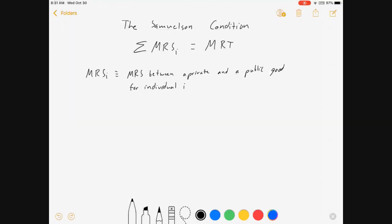That little I there is talking about a person. Each person can have their own marginal rate of substitution. And the MRT is the marginal rate of transformation between a private good and a public good.